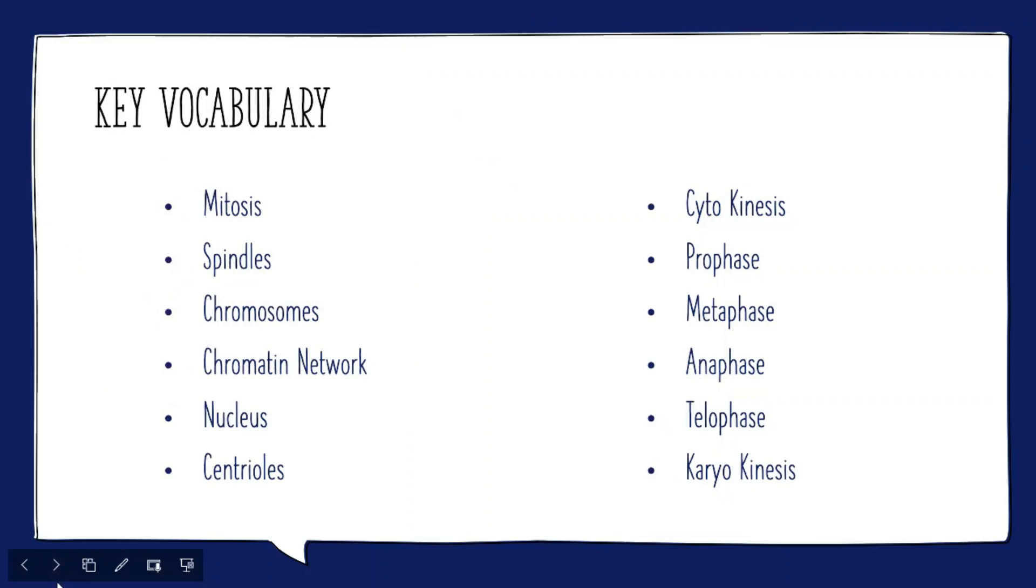Now there are some key vocabularies you will find in this video. They are mitosis, spindles, chromosomes, chromatin network, nucleus, centriole, cytokinesis, prophase, metaphase, anaphase, telophase, and karyokinesis.